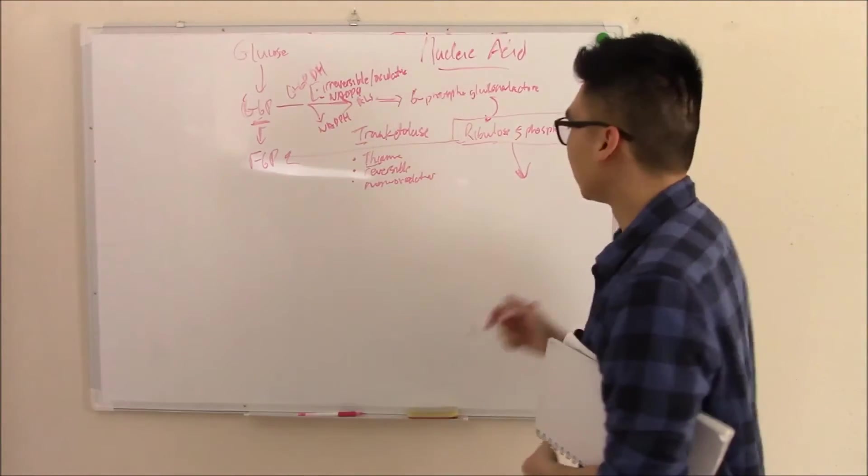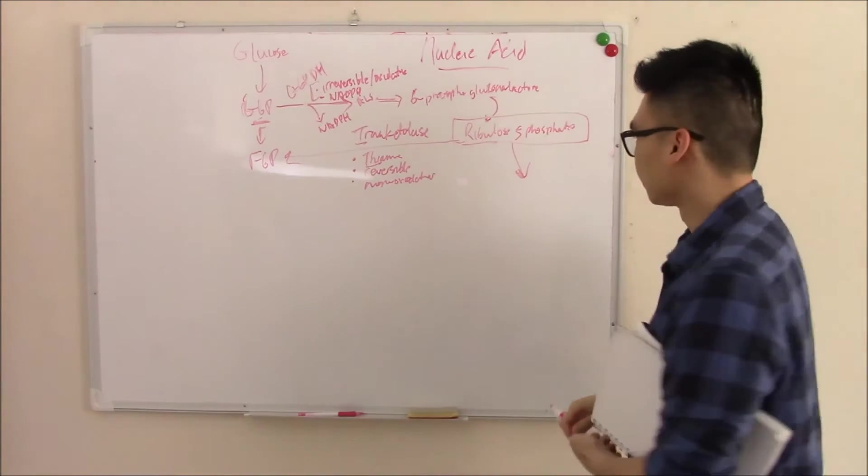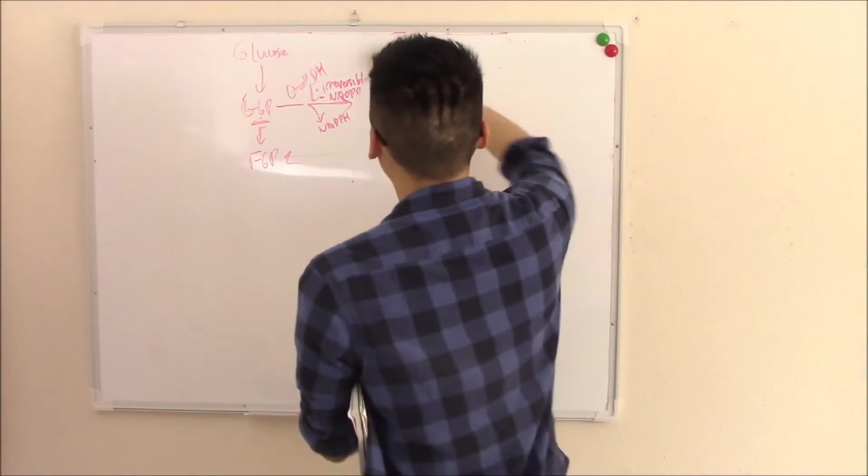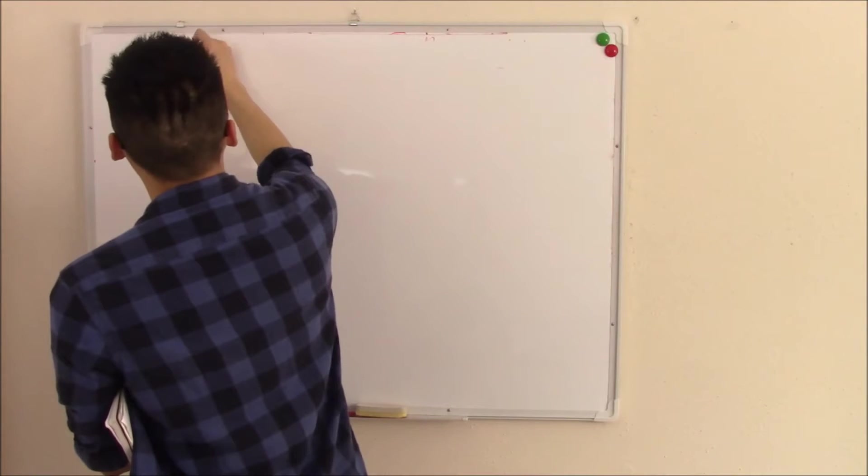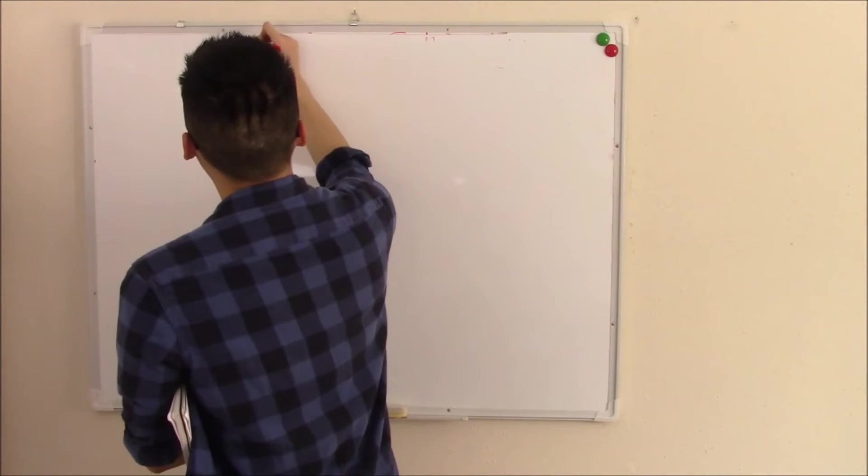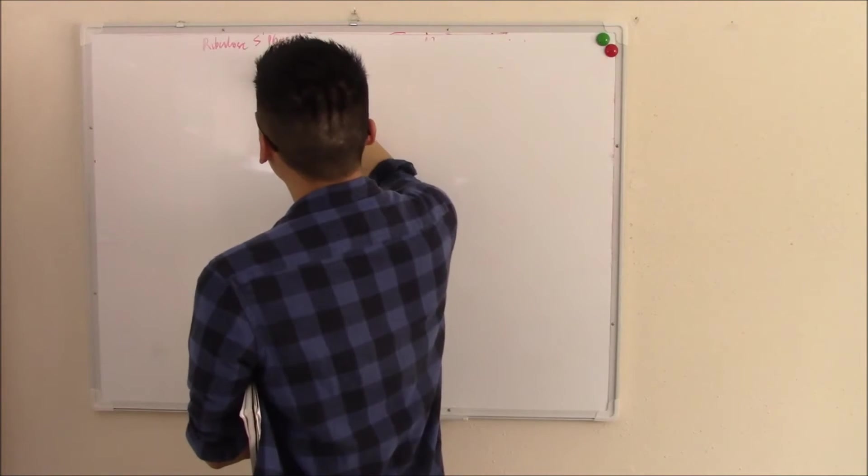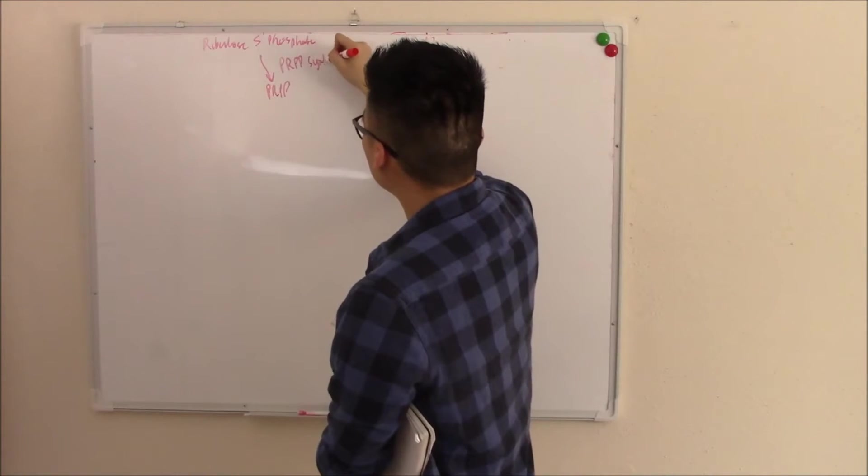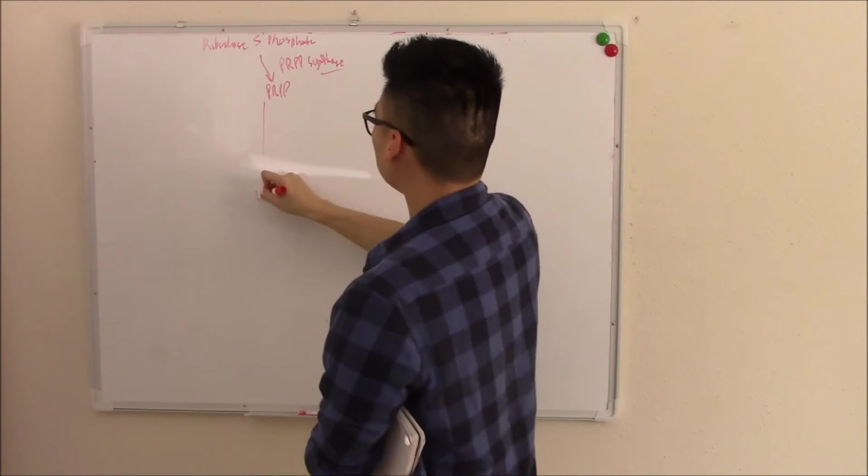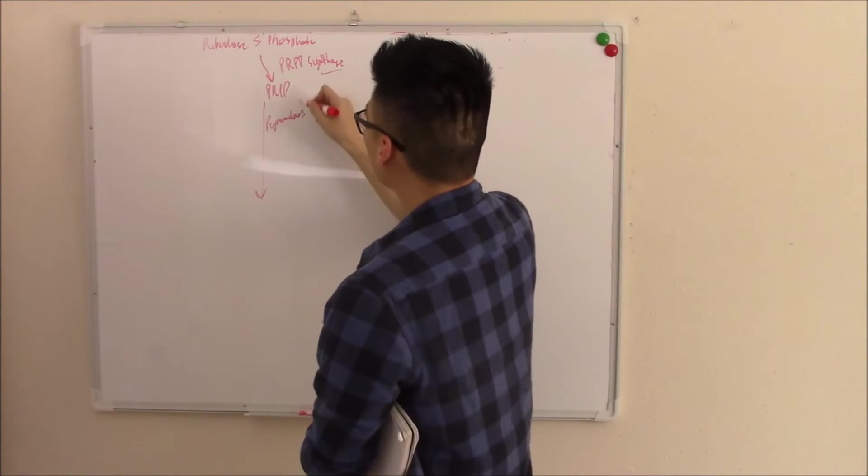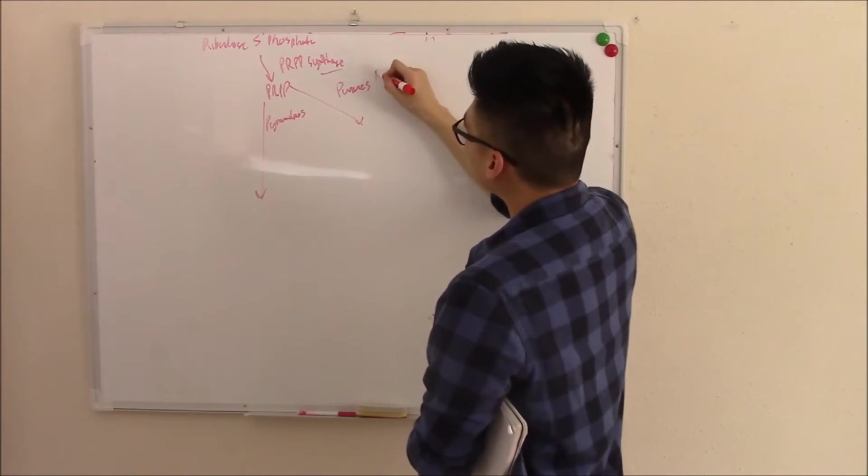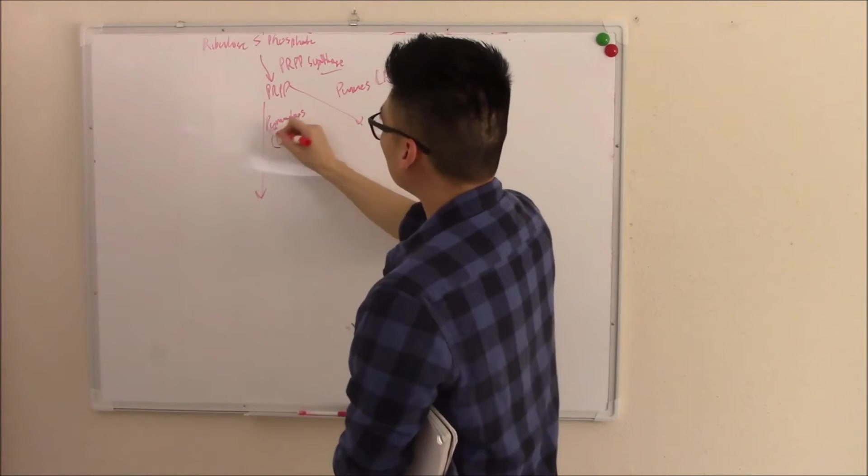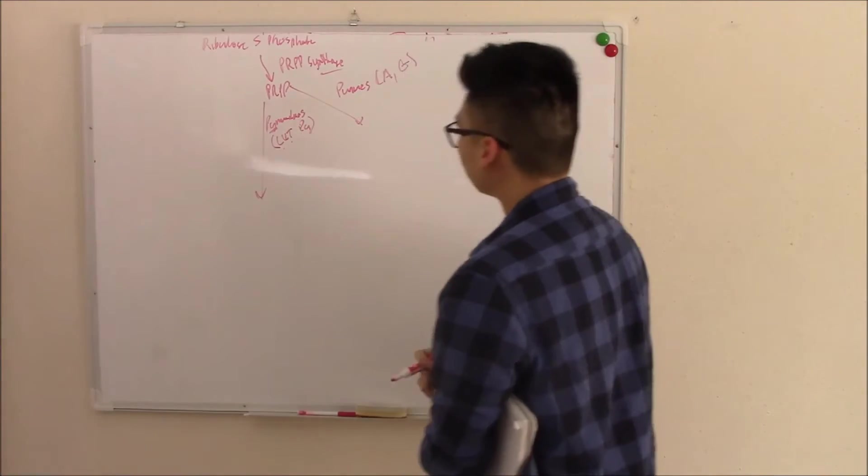But that's not the point of this video. Our point of this video is seeing how purines and pyrimidines are made. Ribulose 5-phosphate is the money. So ribulose 5-phosphate makes something called PRPP. We have PRPP synthase. And PRPP can become purines or pyrimidines. Those are, of course, your purines, purines as gold. Pyrimidines are cut the pie. We'll start with the purines first.